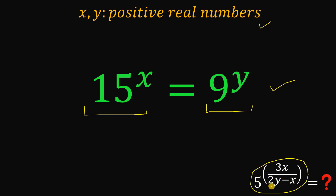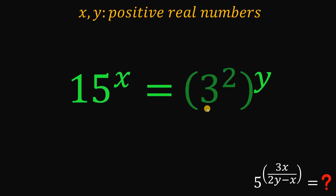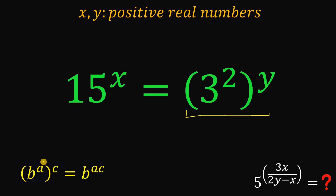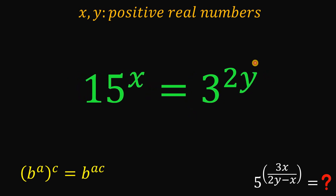To answer this question, let's take note that 9 simply equals 3 raised to the power of 2. Using the law of exponents — b raised to the power of a raised to the power of c equals b raised to the power of a times c — the right hand side of our equation can be written as 3 raised to the power of 2y. This is a good start because we have 2y here and 2y in the expression we want to evaluate.